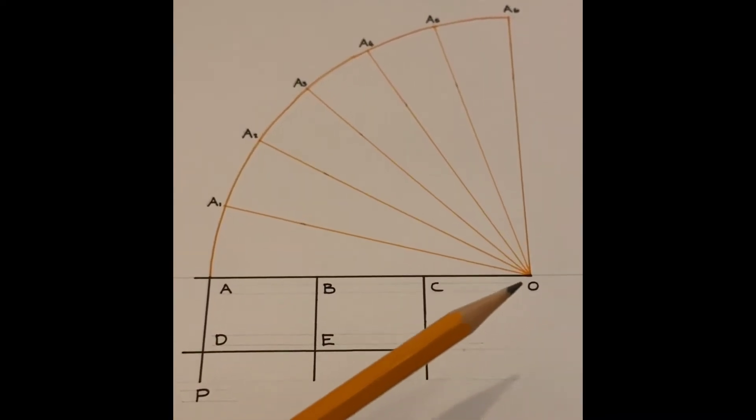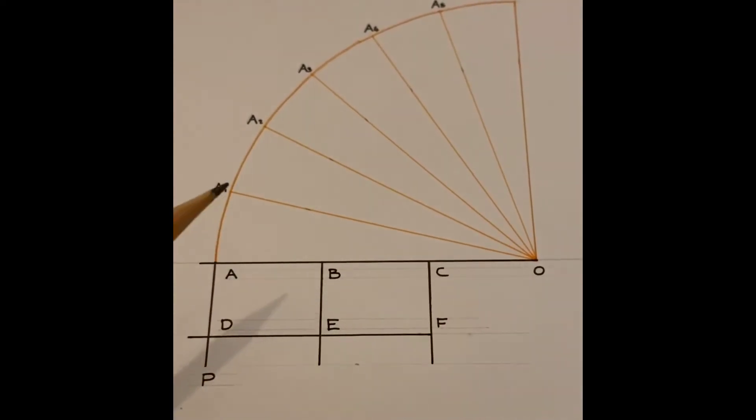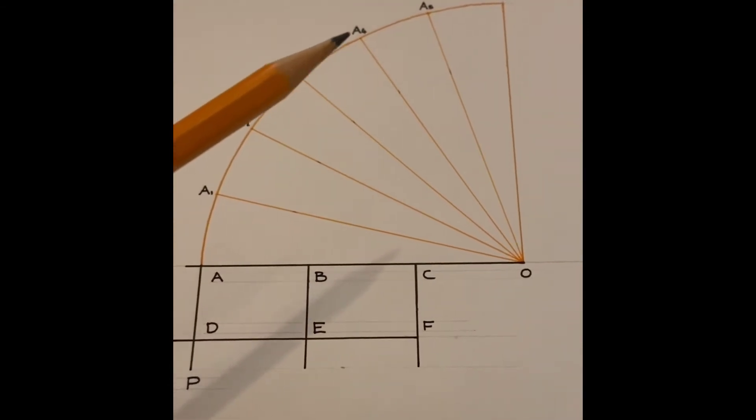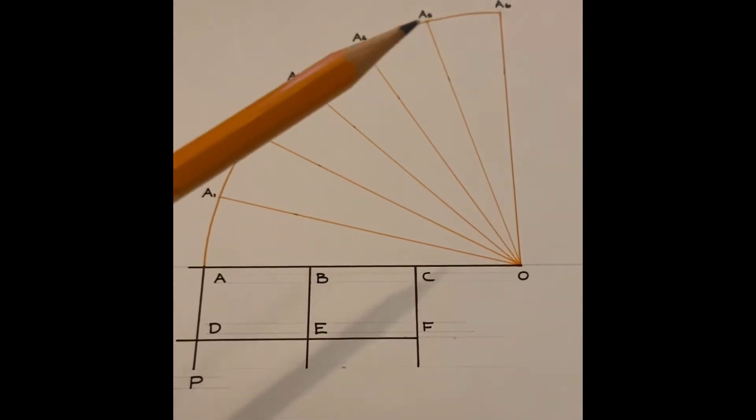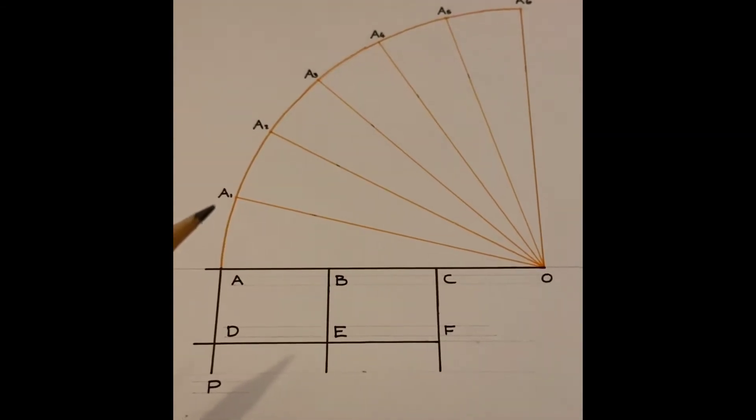So from O and through all the points there we marked at 15 degrees extend out lines and this will give you A1, A2, A3, A4, A5 and A6 the position of A in different locations as the barrier lifts.